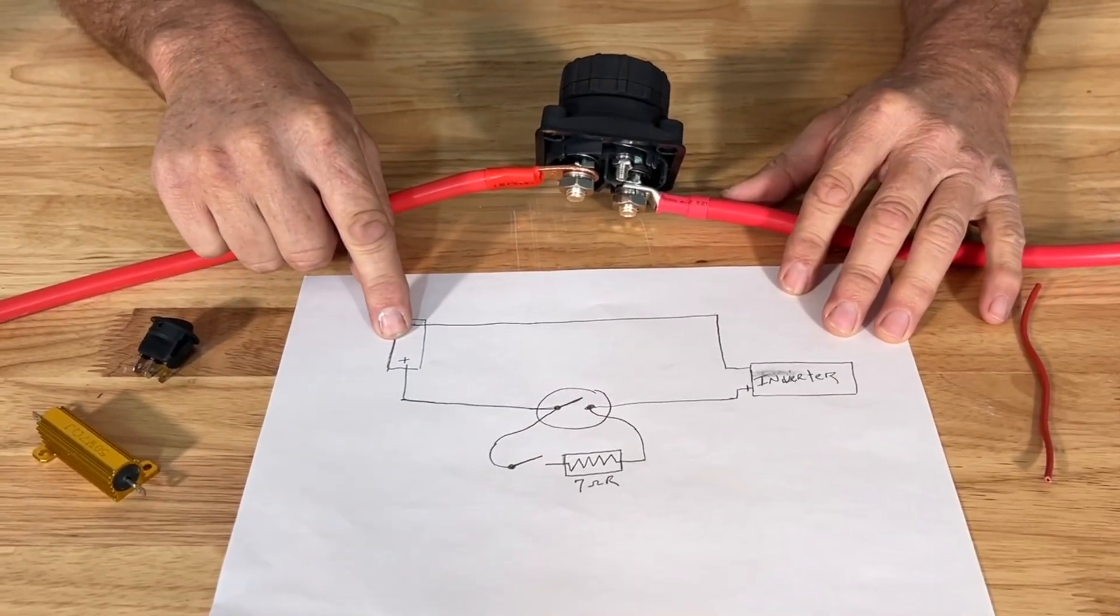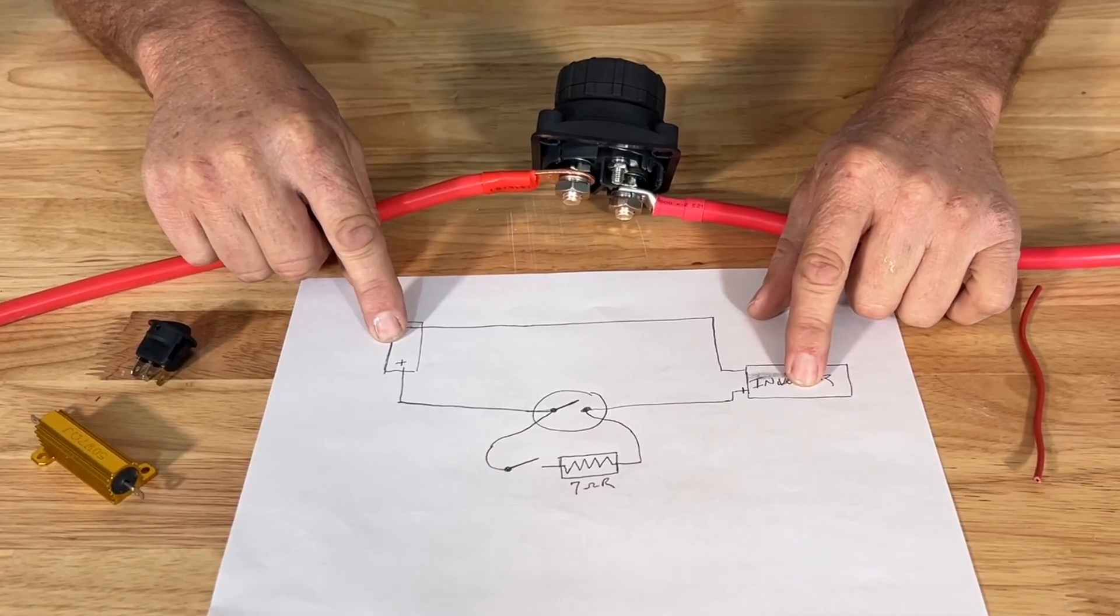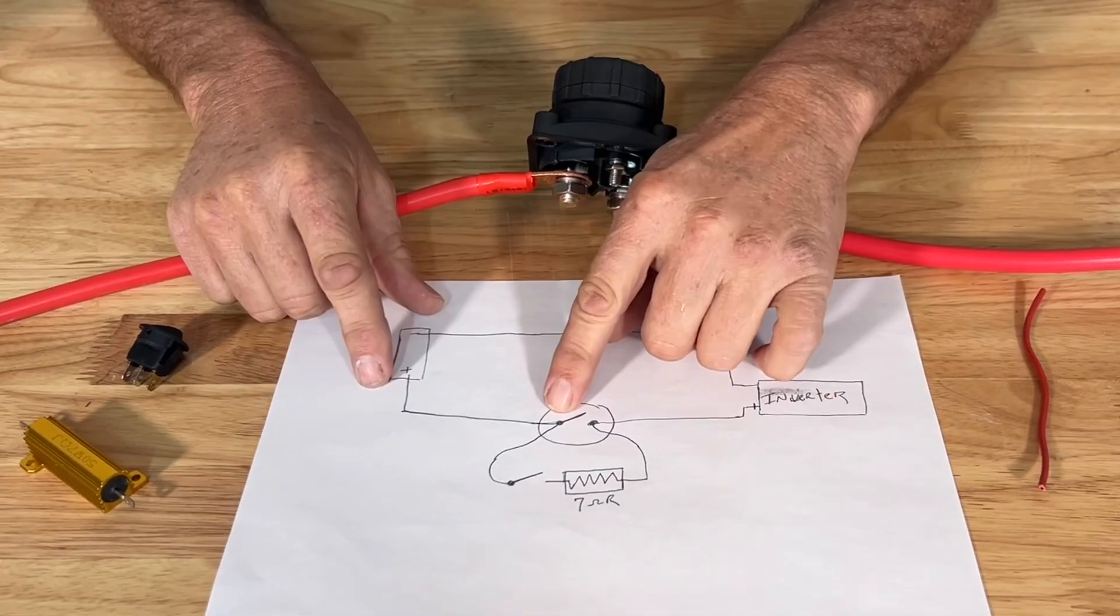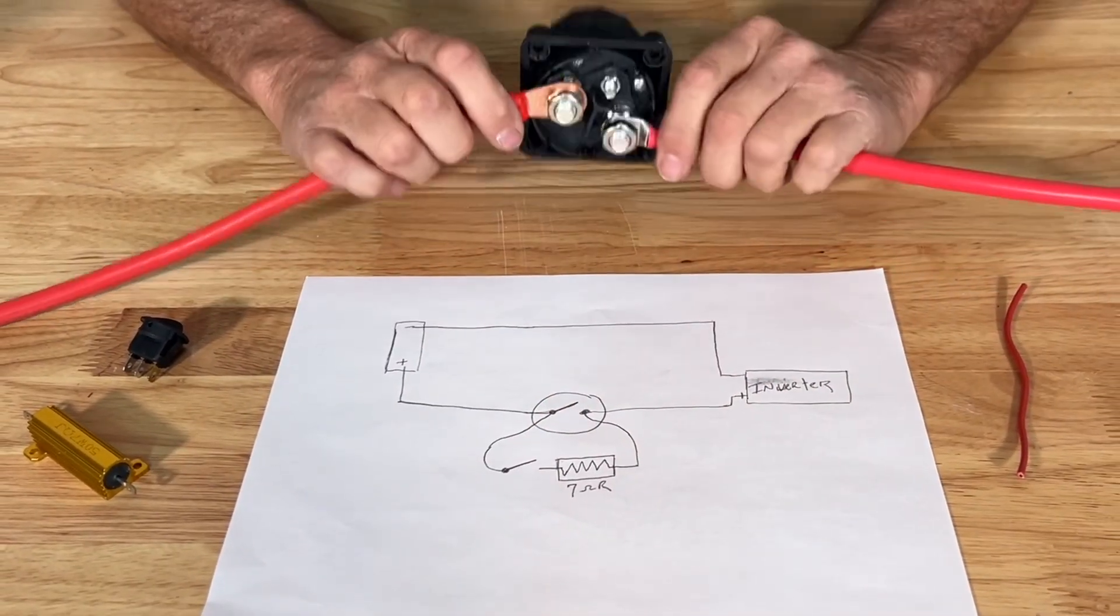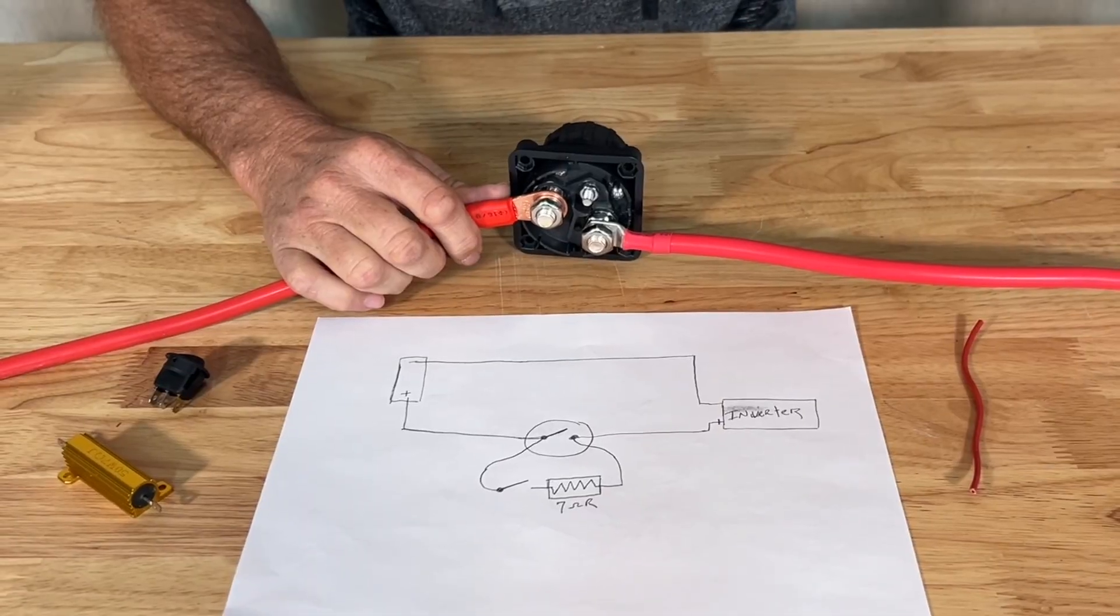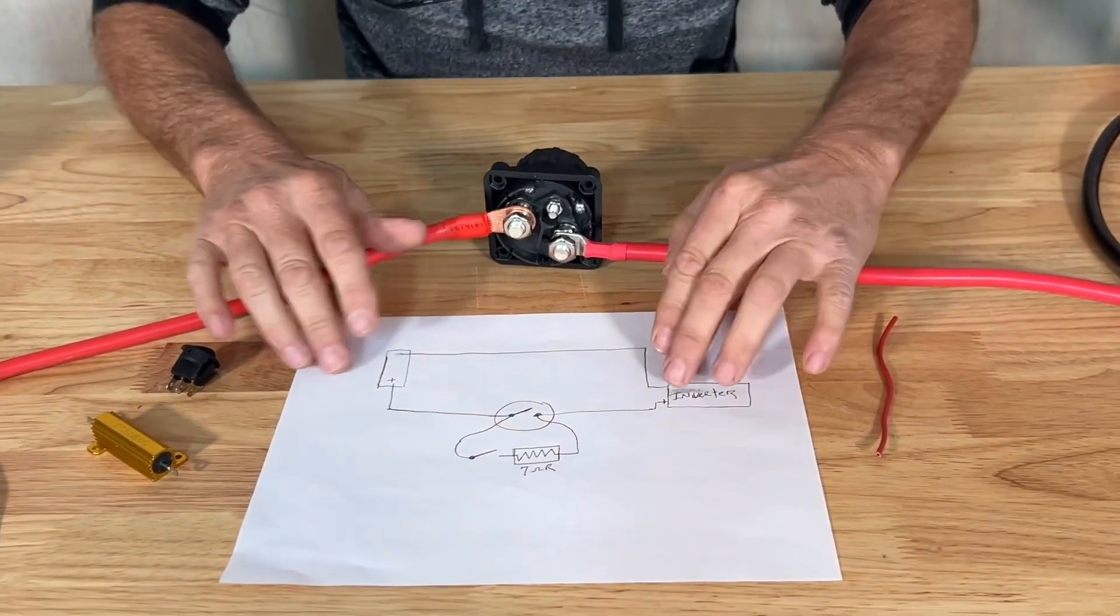So we have our battery here, we have our inverter here, we have our positive coming out of the battery, which is this cable right here, going through our switch, which is our switch right here, and we have it going into the inverter, out of the inverter and back to the battery right here.